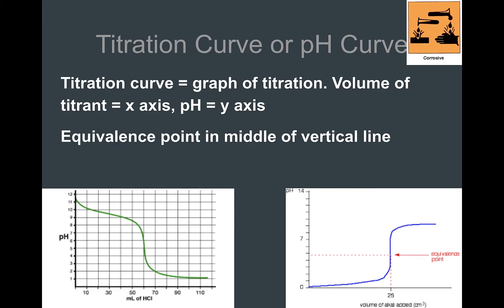When you complete a titration and collect the pH at different intervals, you generate something called a pH curve or a titration curve. The volume of the titrant added goes on the x-axis, and the pH goes on the y-axis. The equivalence point is the middle of that vertical line — as the reaction proceeds you'll see a change in pH, and then when it hits the equivalence point you'll get that almost straight vertical line in the middle.